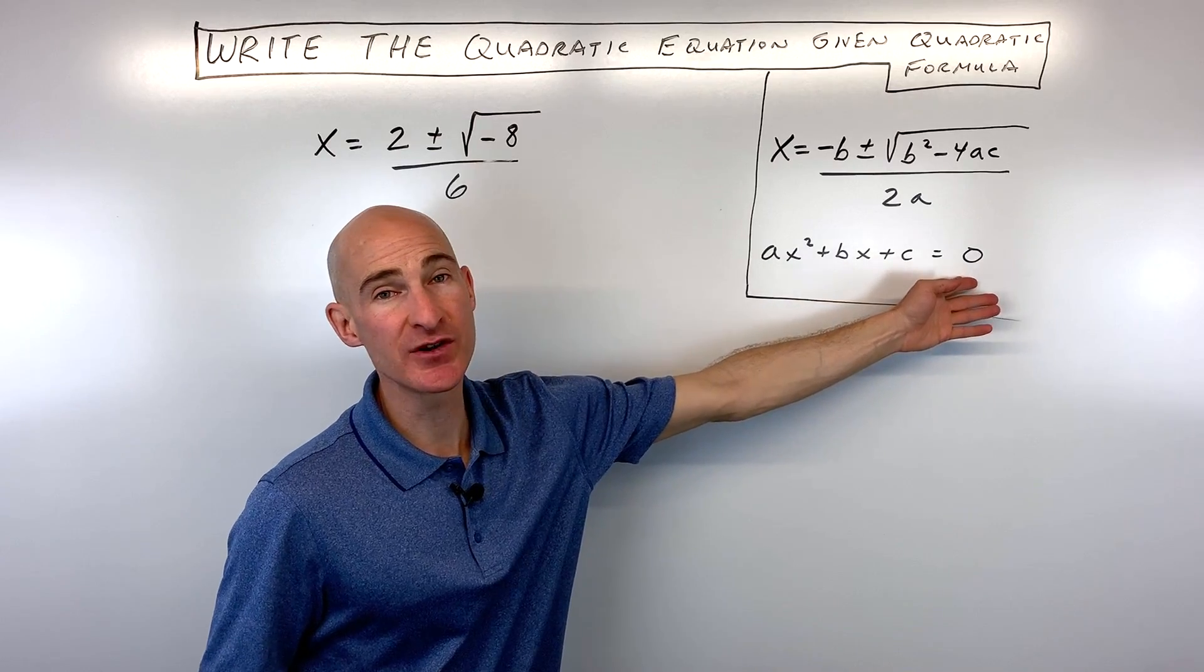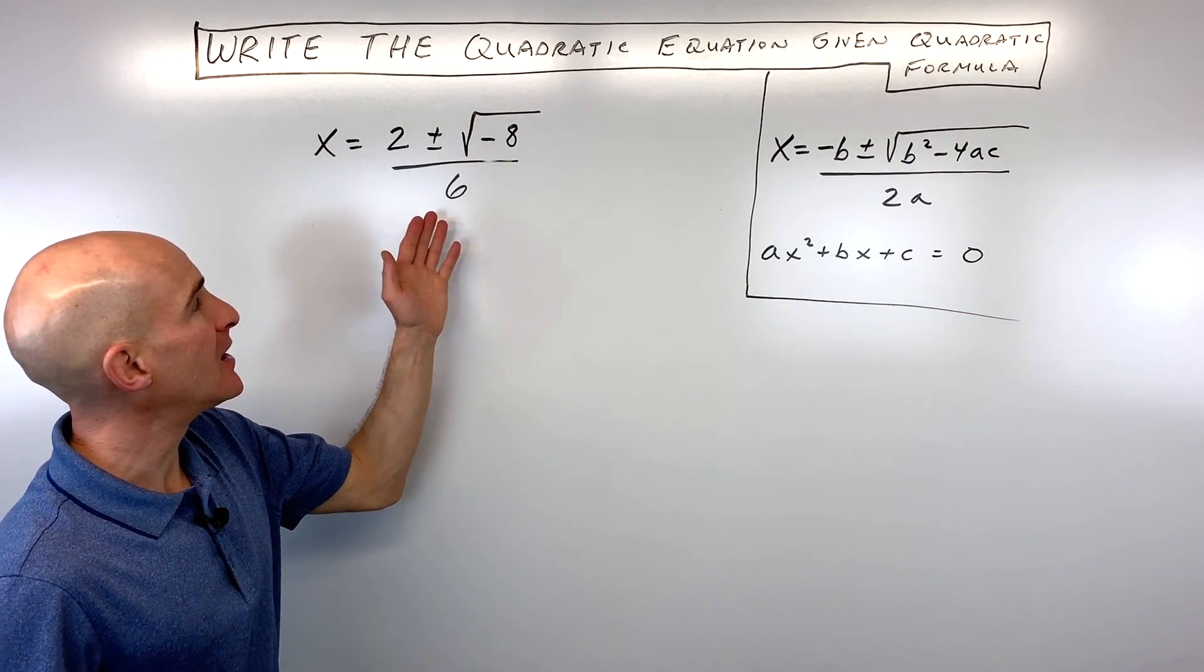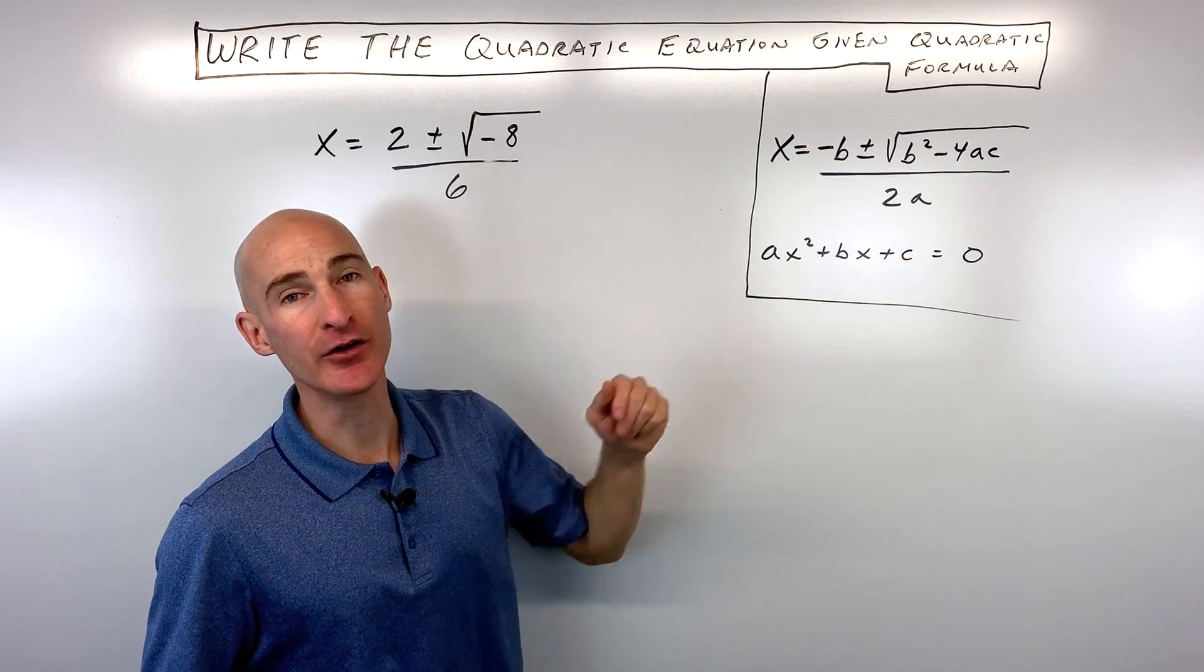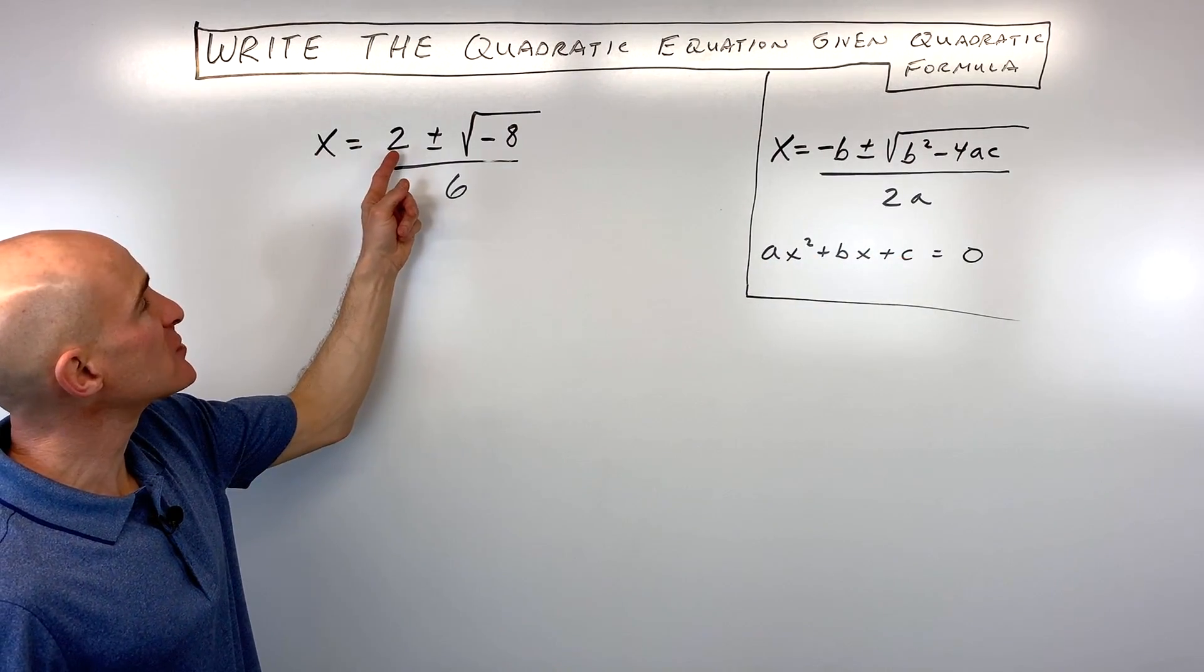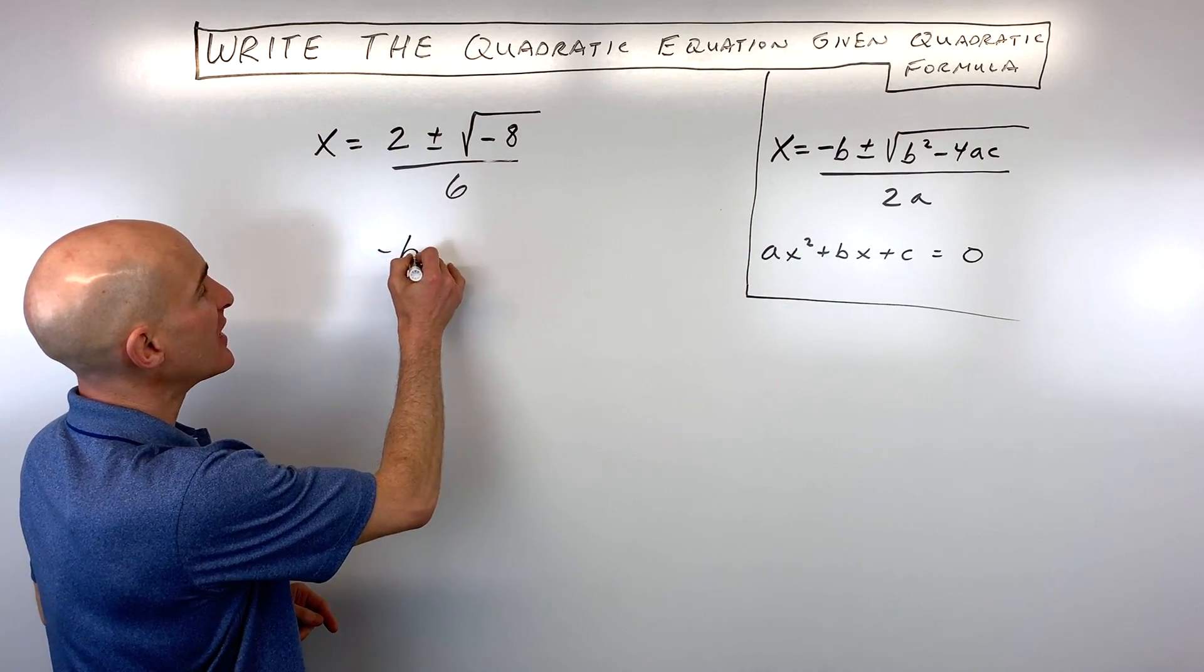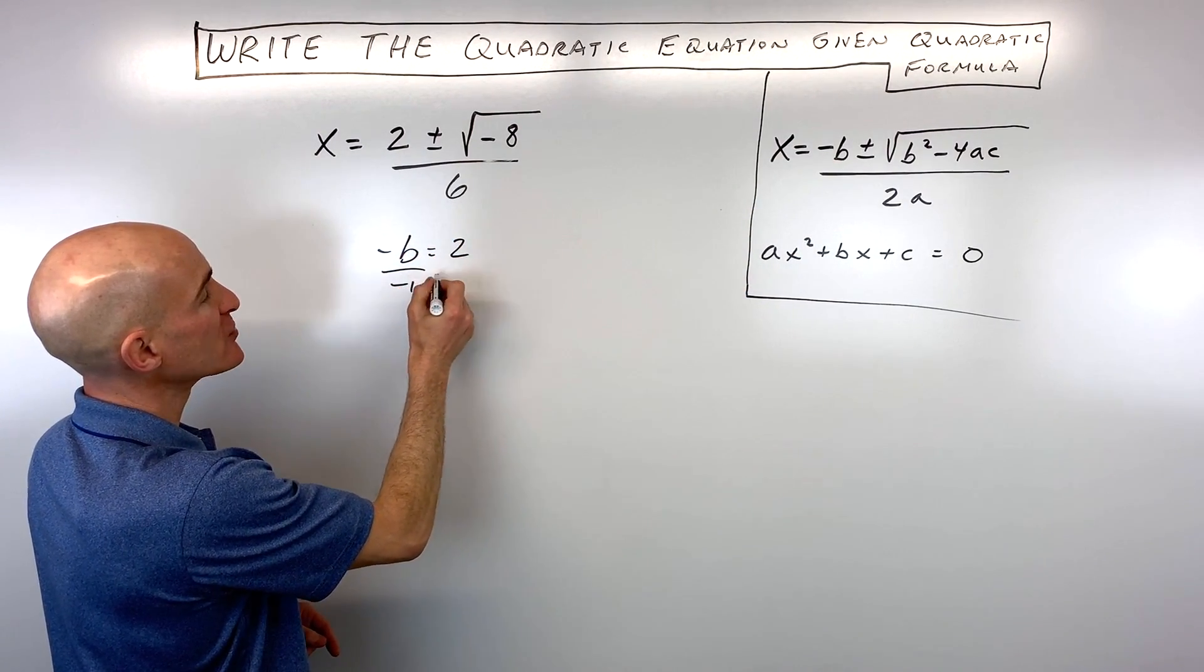So what we're going to do is make a number of equations here to solve for our a, b, and c values. We can see first of all that 2 is equal to negative b. So let's make an equation: negative b equals positive 2. If we divide both sides by negative 1, you can see that b equals negative 2.